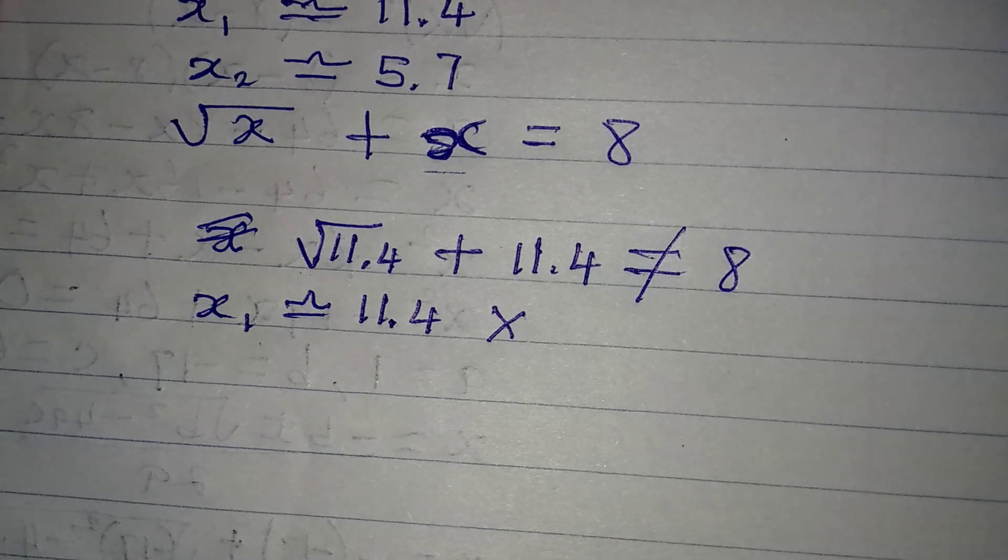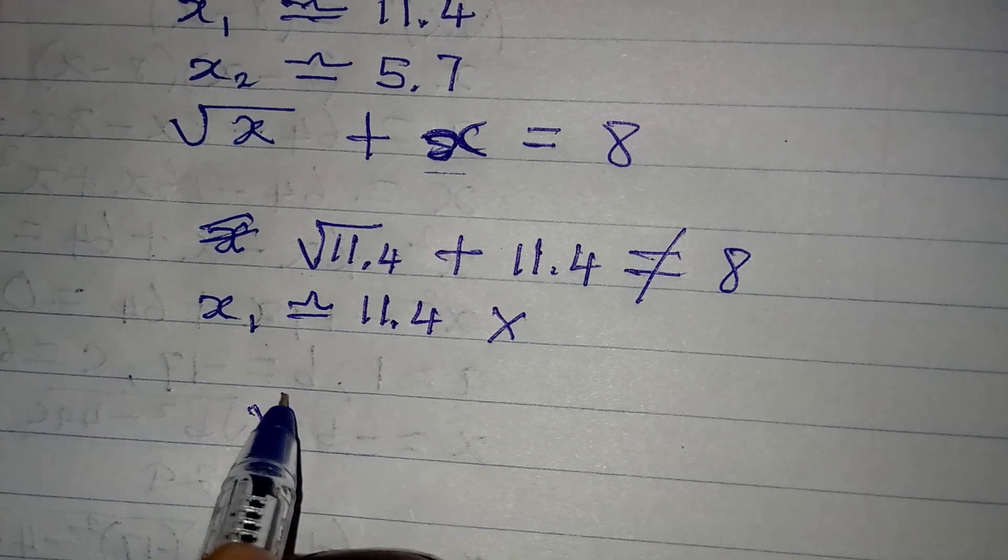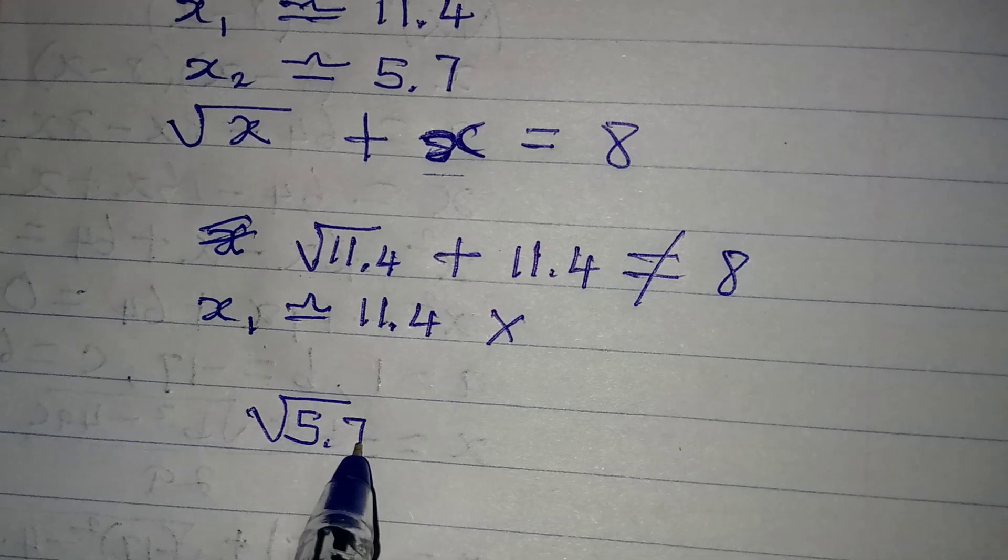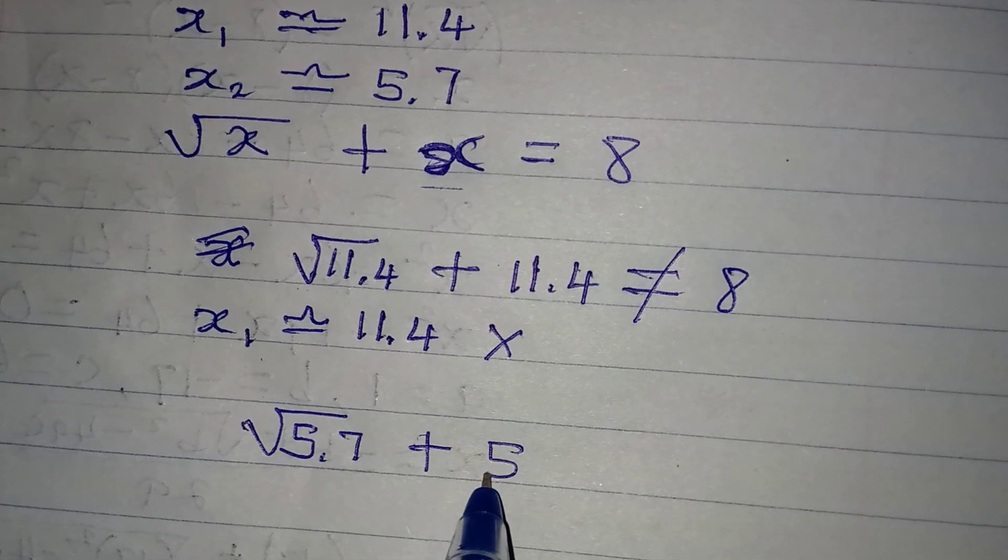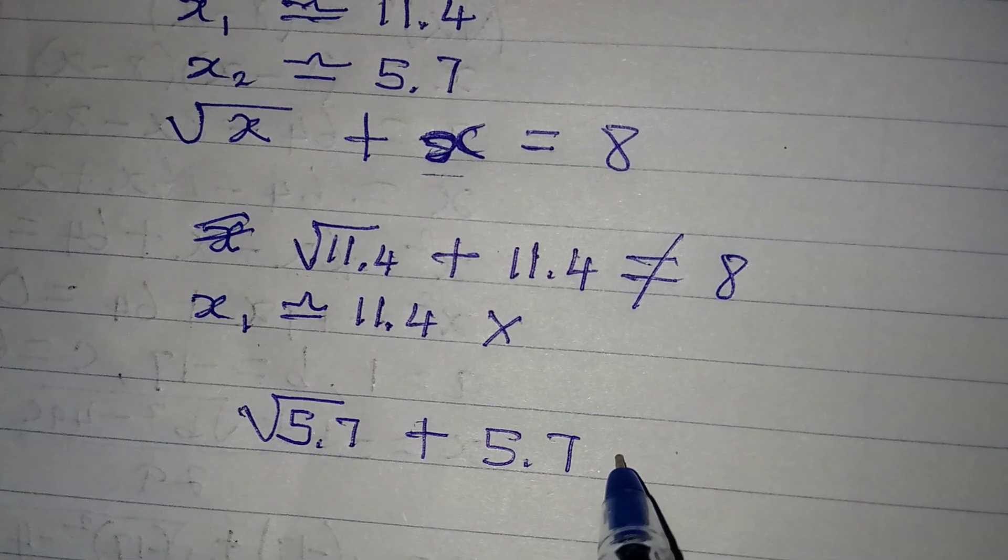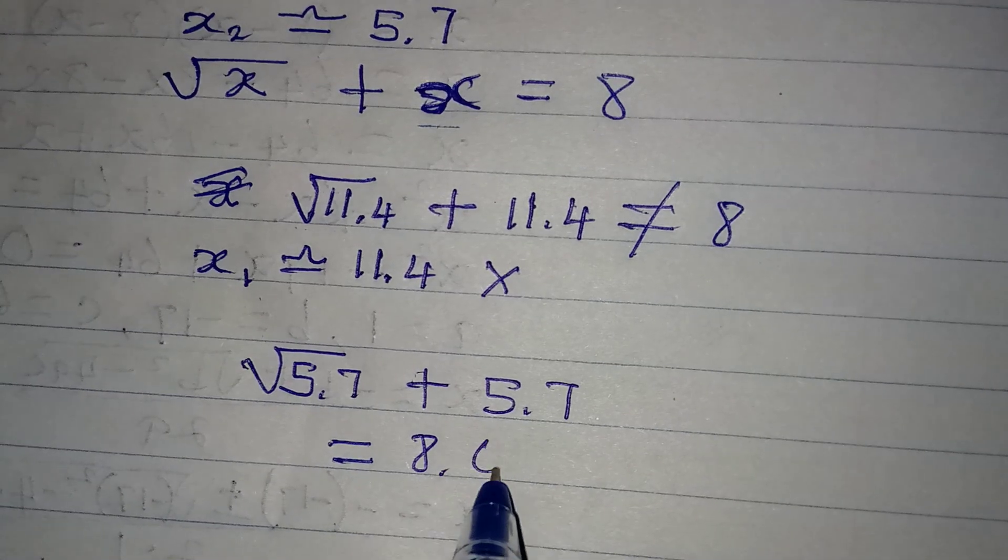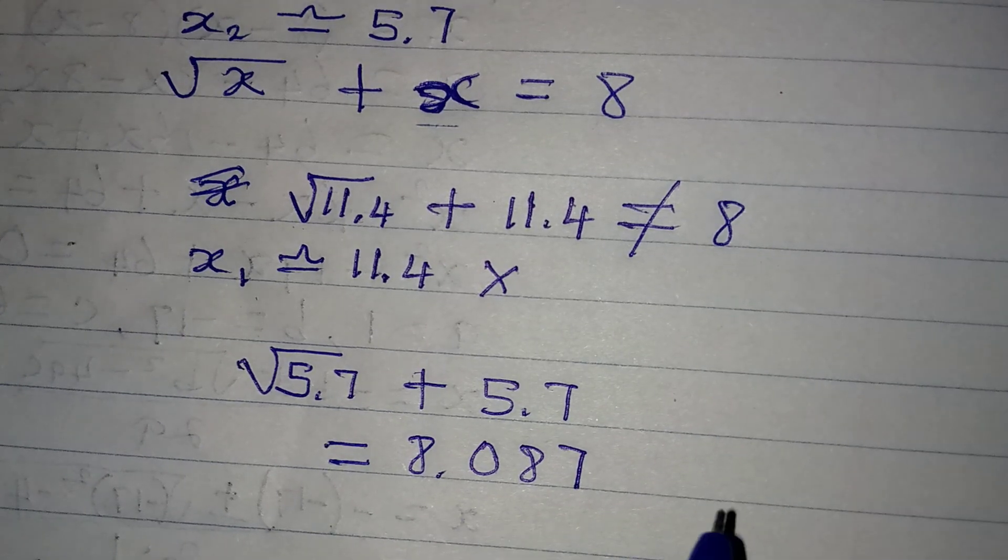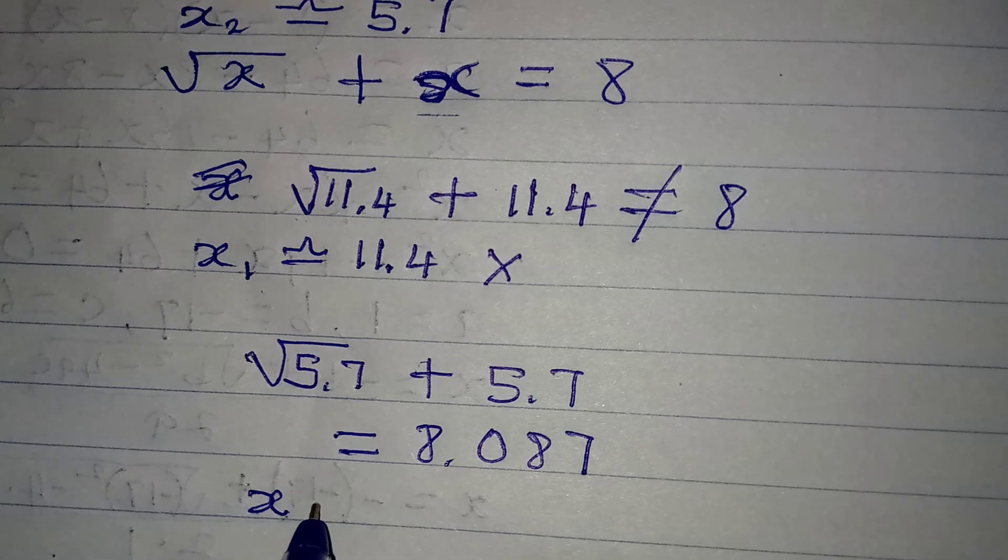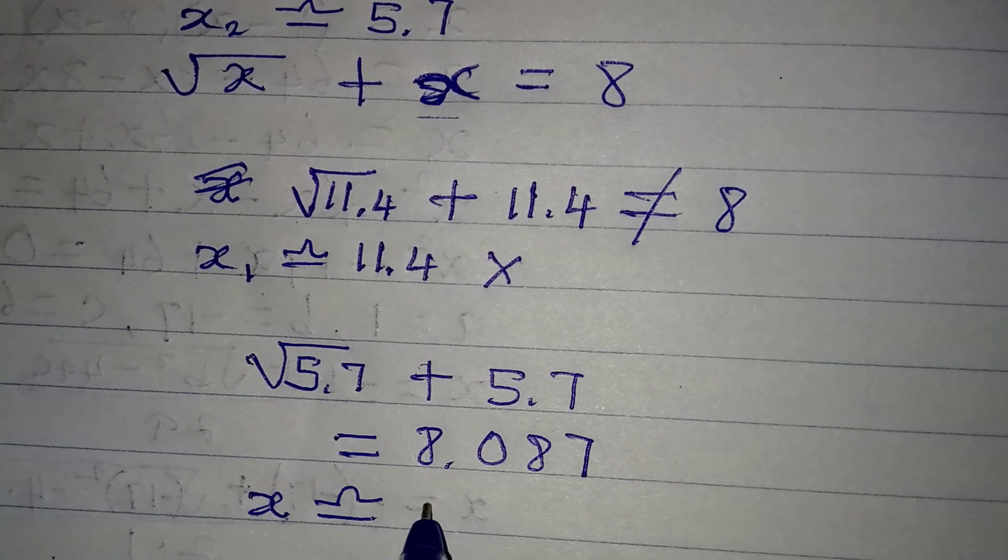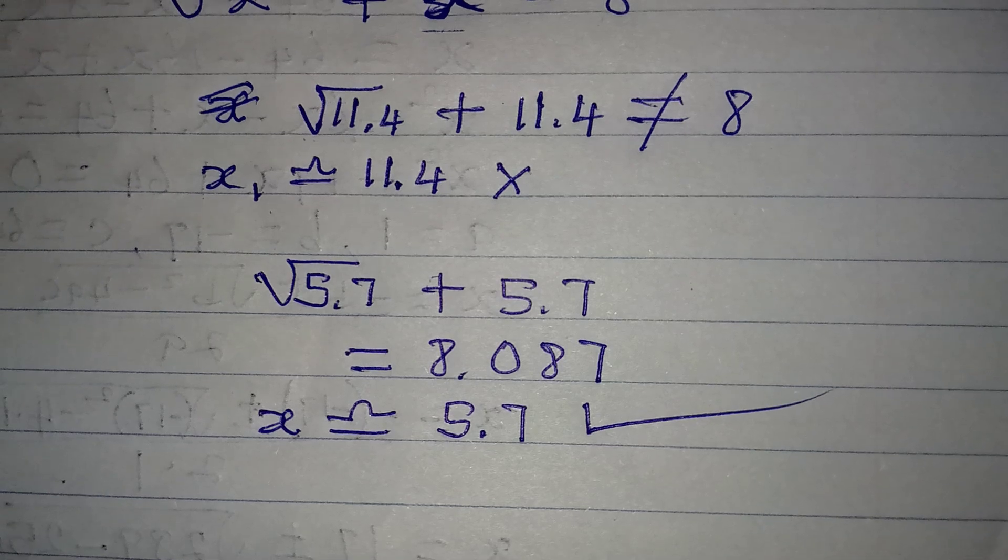Now let's try our second value of x, which is x2, and that will be square root of 5.7. Remember, this is approximated, then plus x. In place of x, I have 5.7 again. Now this is going to give us an approximated value of 8.087. So since this can be approximated to 8, we can say that x approximately equal to 5.7 satisfies the given equation. Thank you for watching.